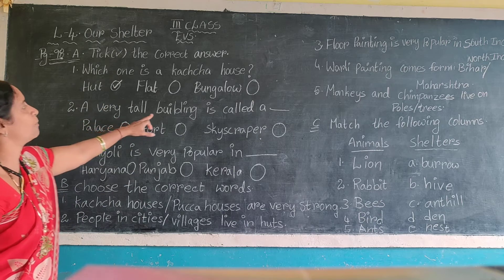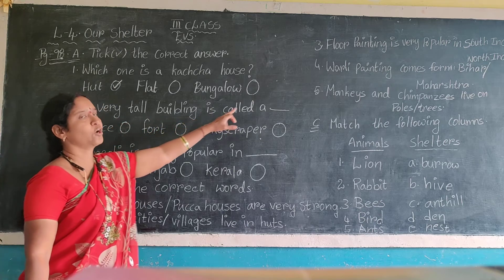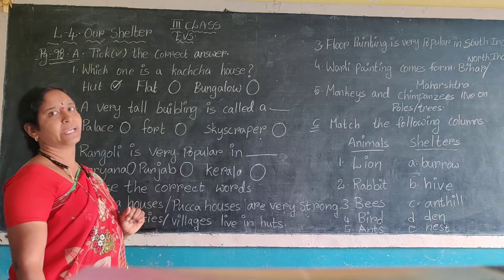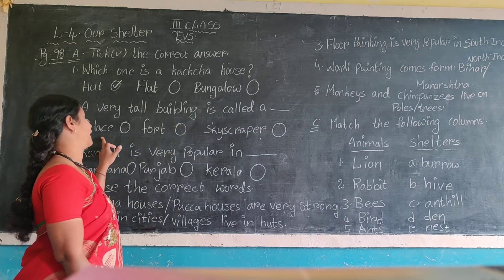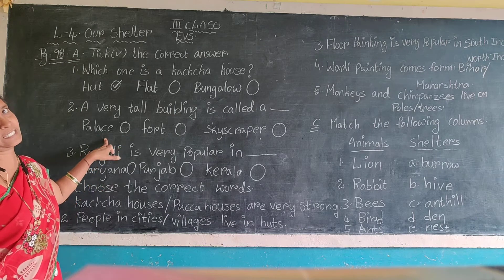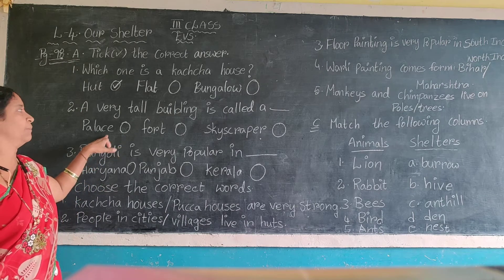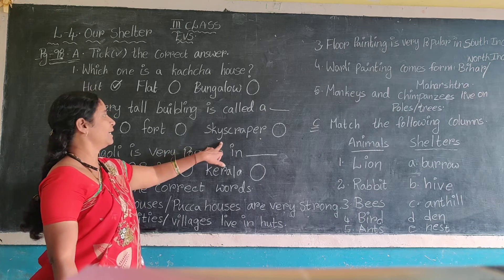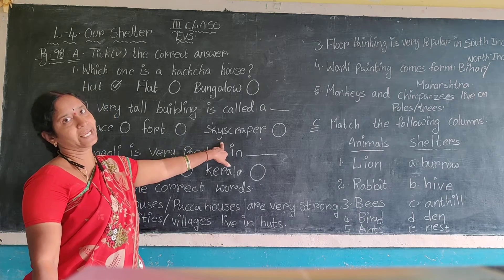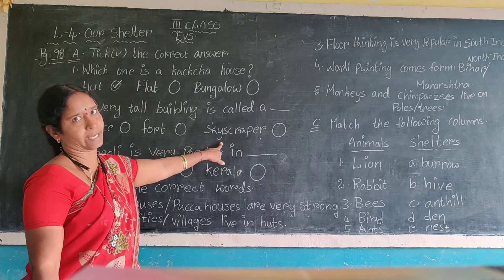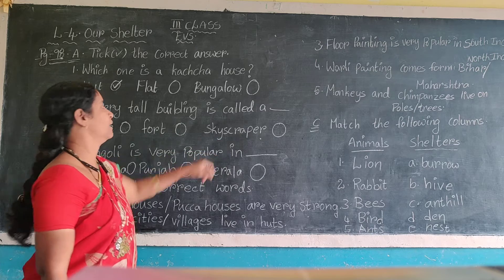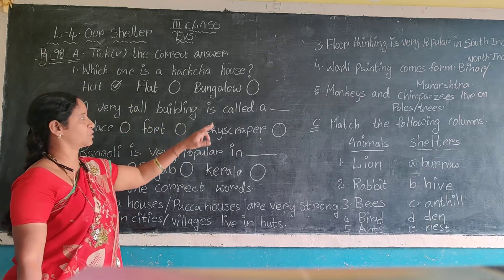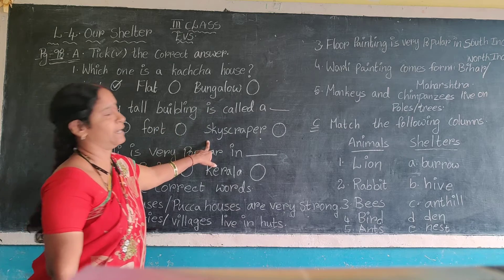Second one: a very tall building is called what? The options are palace, water tower, and skyscraper. So, a very tall building is called a skyscraper.